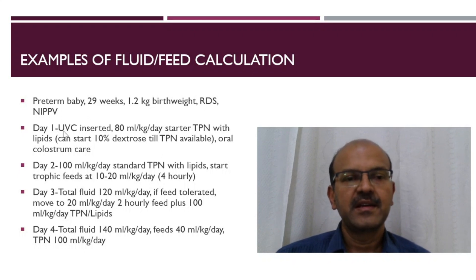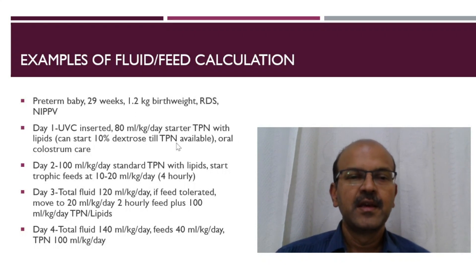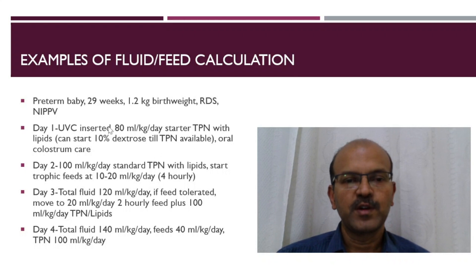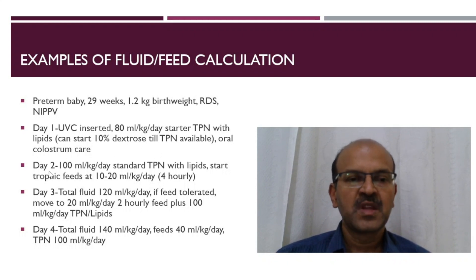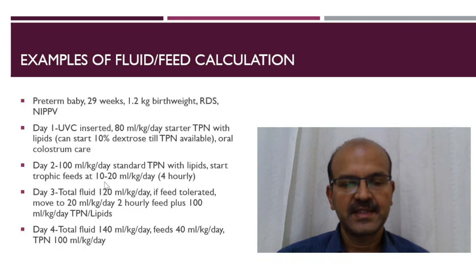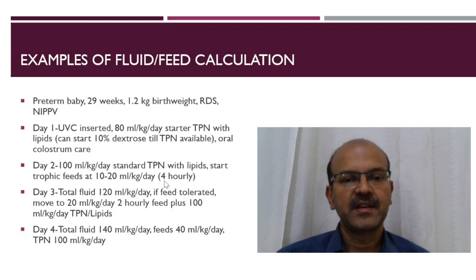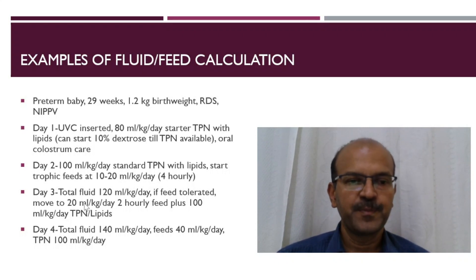The baby had a UVC inserted on day 1 and was started on 80 ml per kilo per day of starter TPN, with lipids at 2 grams and oral colostrum care when colostrum became available. By day 2, the baby was on 100 ml per kilo per day standard TPN with lipids, and was started on trophic feeds as extra at 10 to 20 ml per kilo per day, on every 4-hour feeds divided volume.